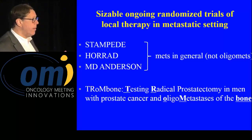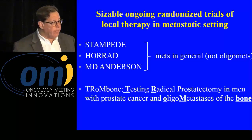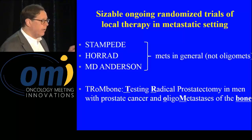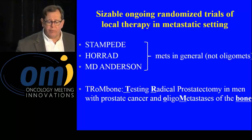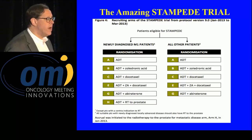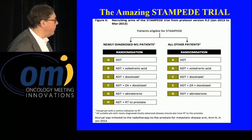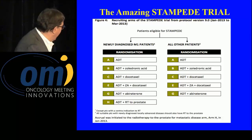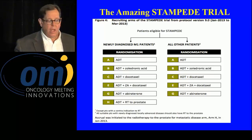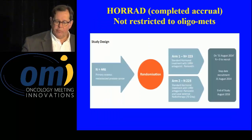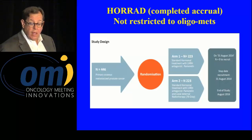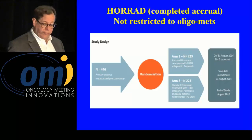Treating the primary in the context of metastatic disease — the Stampede trial has an arm looking at treatment of the primary. HORAD, a predominantly Dutch European trial, has already completed accrual. MD Anderson has a large trial going on as well. There's also the Trombone trial, which involves radical prostatectomy in oligometastatic disease. In Stampede's arm H — ADT plus radiation to the prostate in newly diagnosed M1 disease — they're determining whether treating the primary offers an advantage. HORAD, not restricted to oligomets, has 446 patients enrolled, and this is an overall survival study.